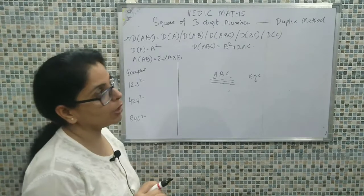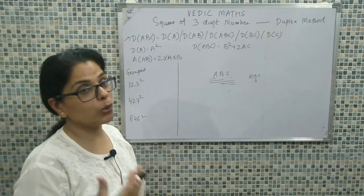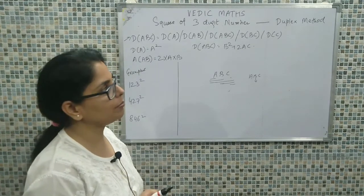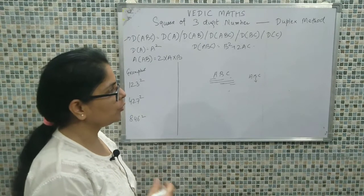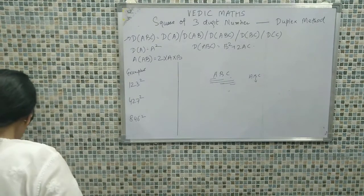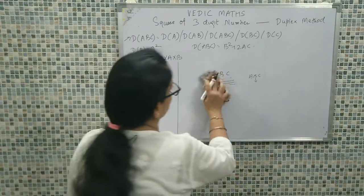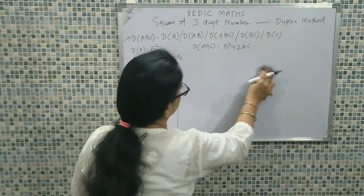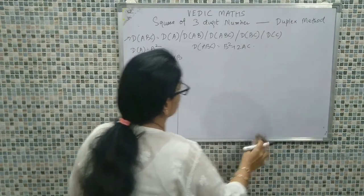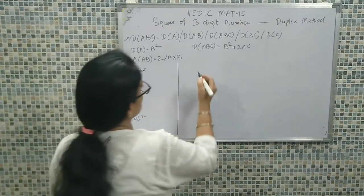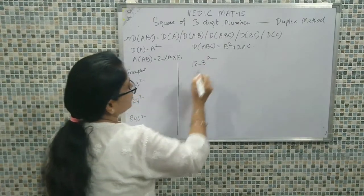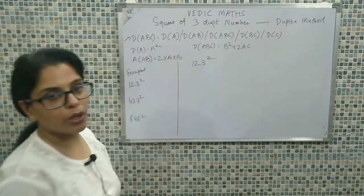So we have understood how to write and apply the duplex formula. Now we would be taking up particular examples to see how it is actually implemented. Let's take the first example: we need to calculate the square of 123.